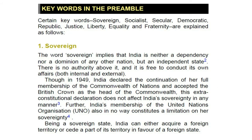Keywords in the preamble: sovereign, socialist, secular, democratic, republic, justice, liberty, equality and fraternity are explained as follows. 1. Sovereign: the word sovereign implies that India is neither a dependency nor a dominion of any other nation, but an independent state. There is no authority above it, and it is free to conduct its own affairs, both internal and external.